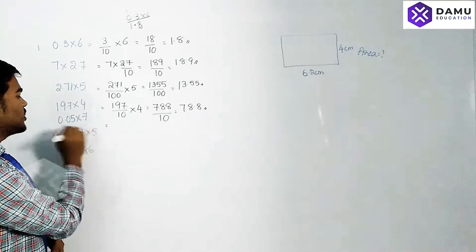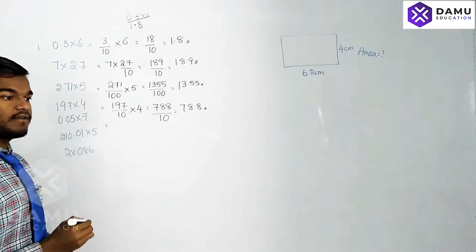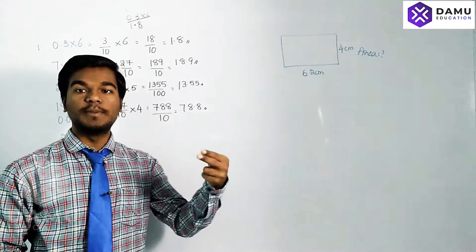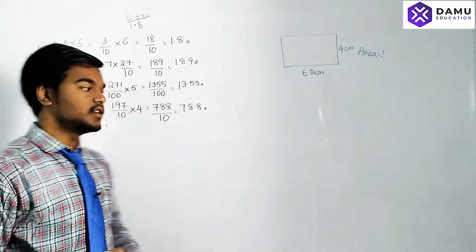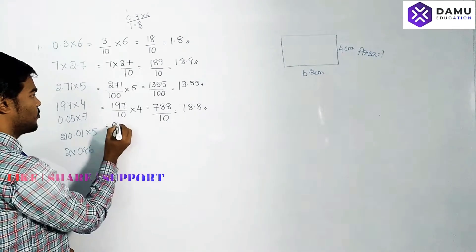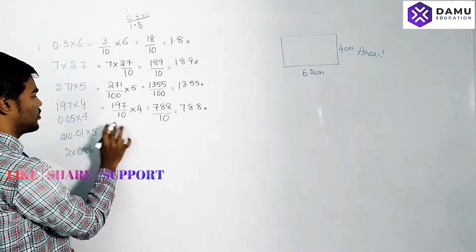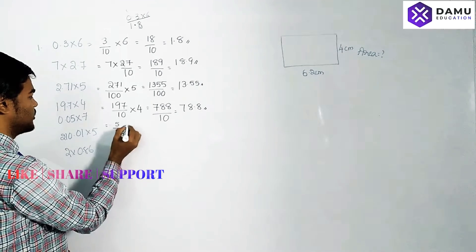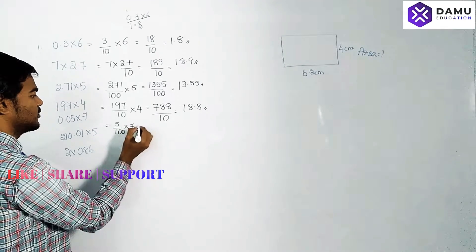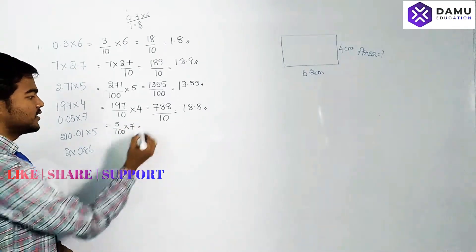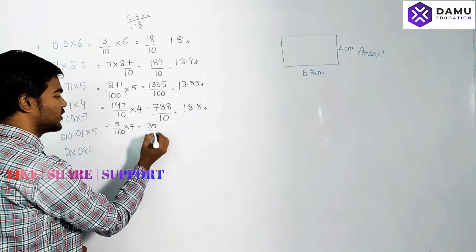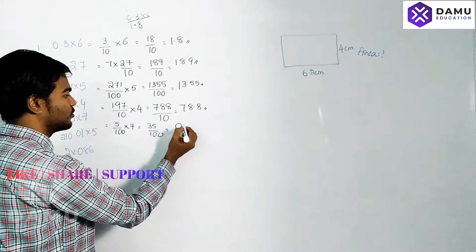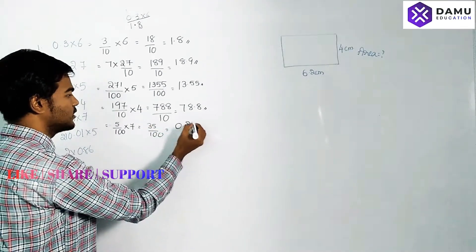Next: 0.05 into 7. After the point there are two decimal places, so we write 5 by 100 into 7, which equals 35 by 100. We leave two places from the right side and put the point — the answer is 0.35.